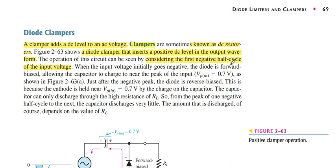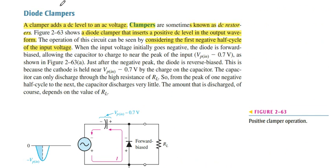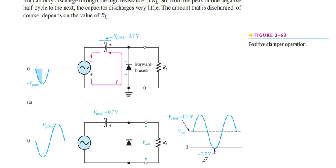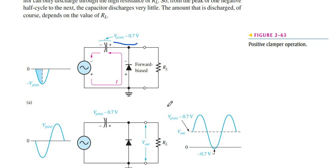Now we use the diode clamper. The diode is basically used for clamping the input voltage. When a capacitor is connected with the diode and the diode is in the opposite direction — reverse direction — the diode is forward biased and it conducts the current. When the diode is forward biased, it can charge the capacitor at this value, and we get the output voltage like that.